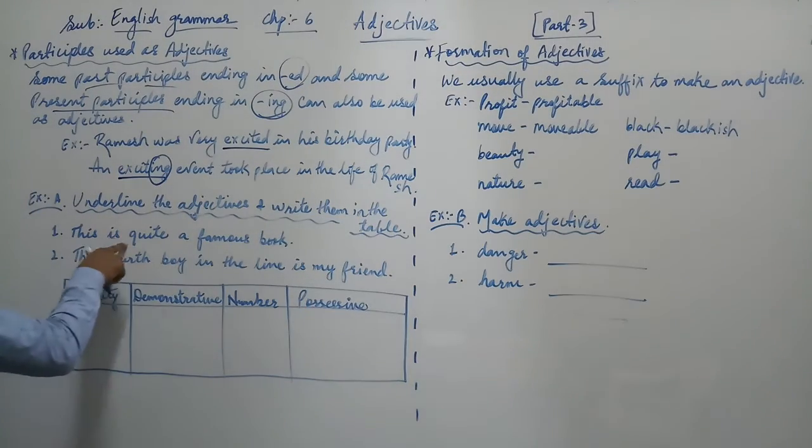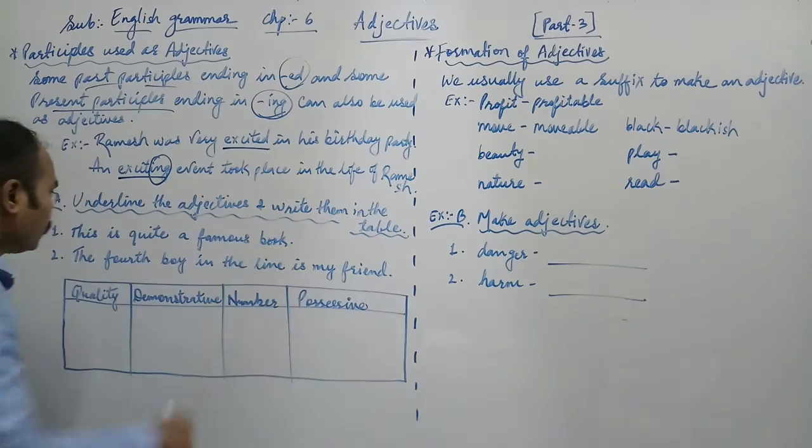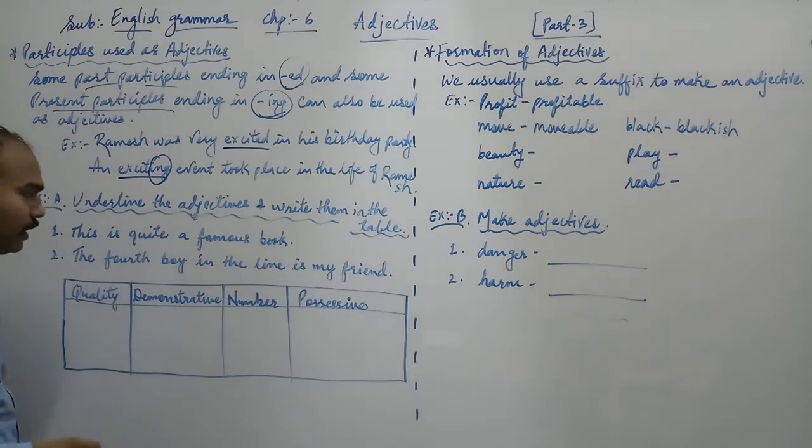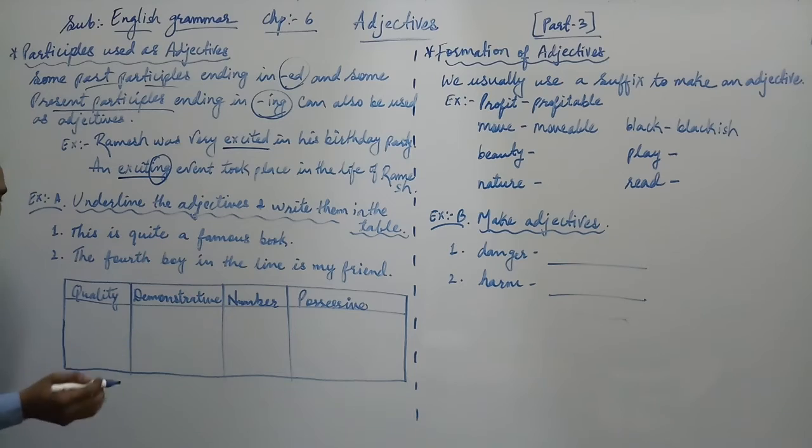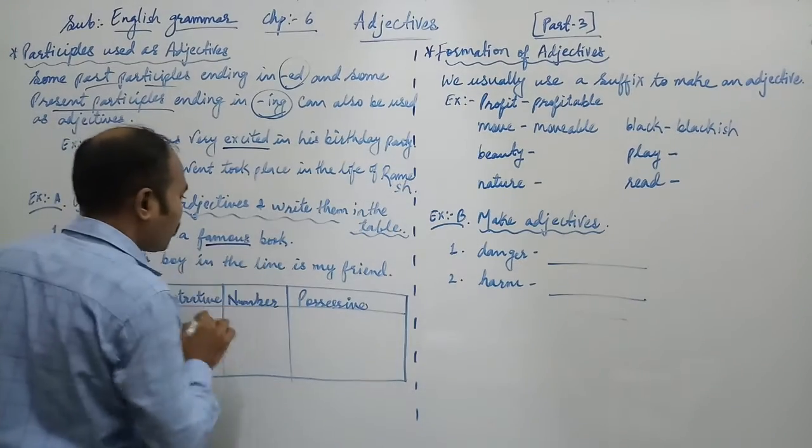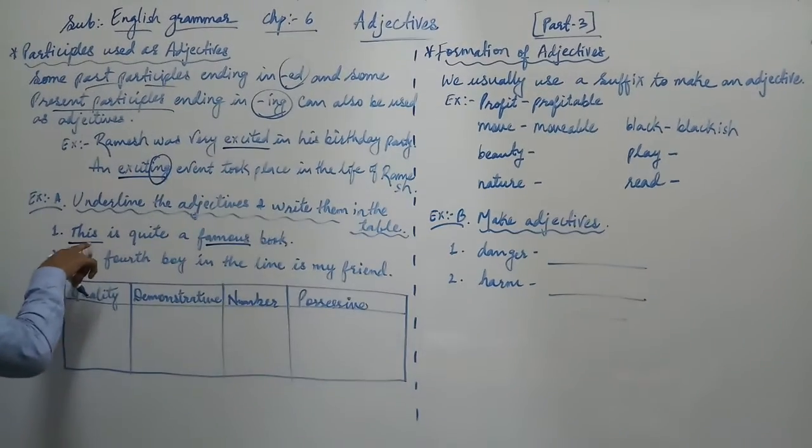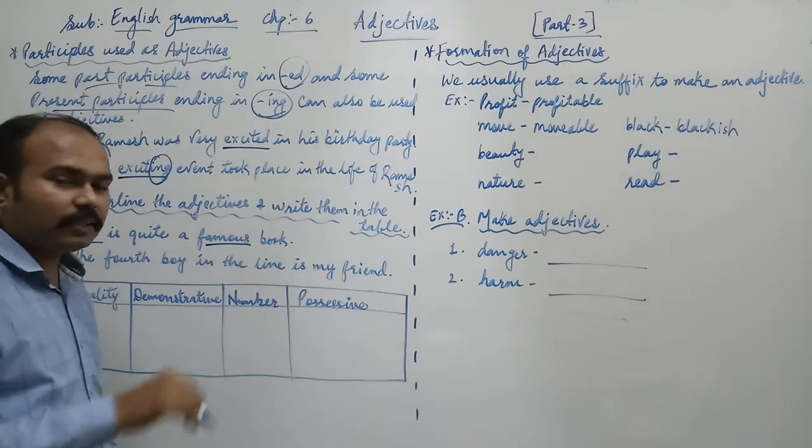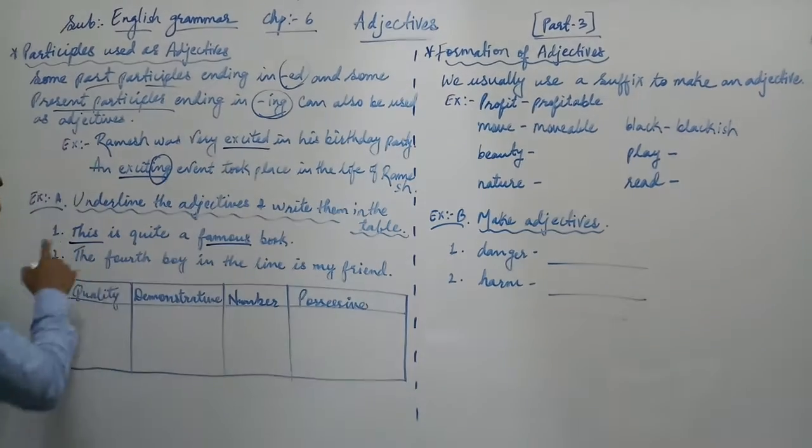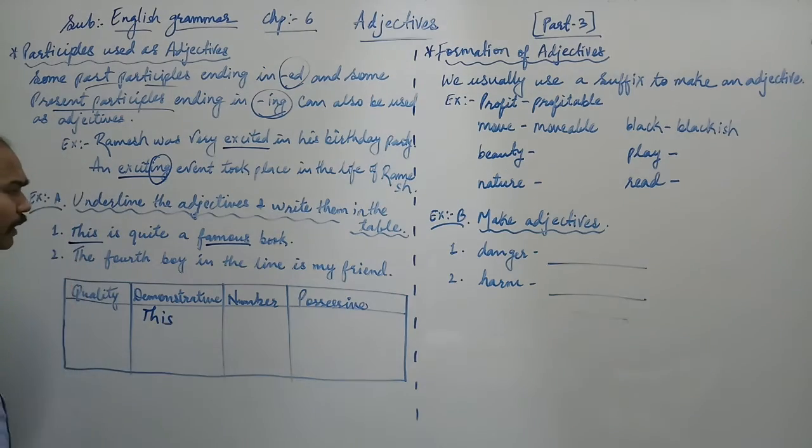Question number 1. This is quite a famous book. So which adjectives can we find? This is the adjective. This is quite a famous book. Famous describes the book. So starting with this, which points to a particular noun, it becomes demonstrative.